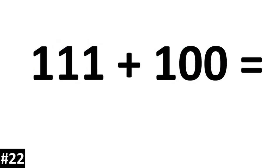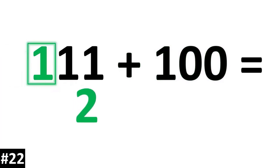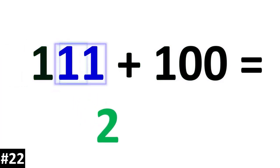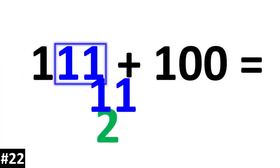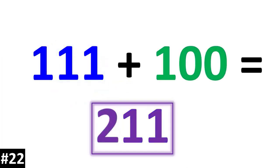111 plus 100. The hundreds digit of 1 is going to become a 2. The other numbers stay the same, and we get 211.